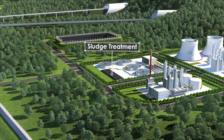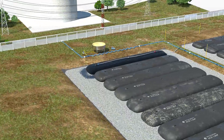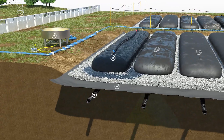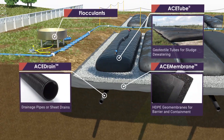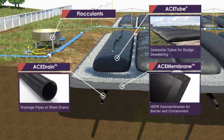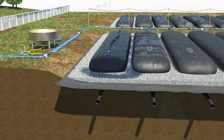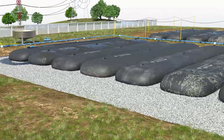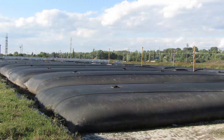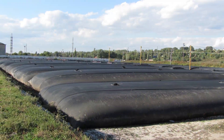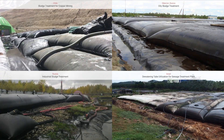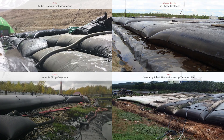Sludge Treatment: Filling sludge into ACE-TEX geotextile tube and then adding flocculants or other chemical additives will promote solid-liquid separation, leave the waste solid in the bag, effectively decrease treatment time and transportation cost. The high sludge treatment capacity with low space requirement of this system has been recognized gradually by the market in this field.